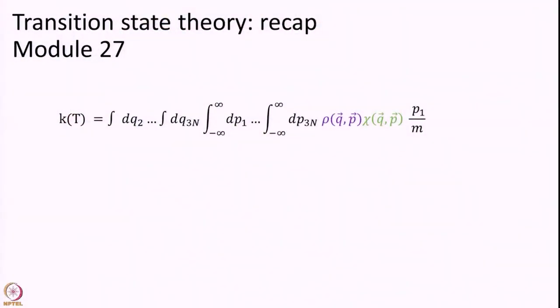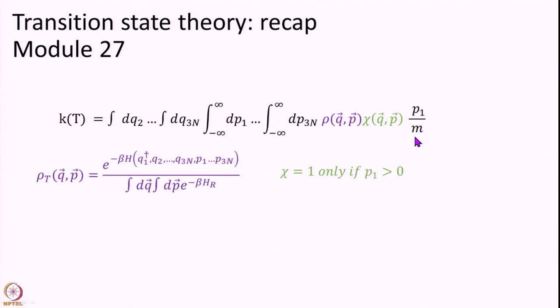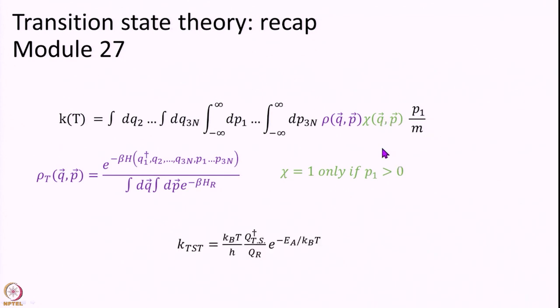We will do a quick recap of what we covered in module 27. We wrote an expression to calculate the rate constant at a given temperature by integrating over the dividing surface over momenta. This expression contains the density rho, the transmission factor chi, and the flux. Transition state theory assumes rho to be the thermal Boltzmann density. For chi, we put chi equal to 1 if p_1 is greater than 0, otherwise chi equal to 0. With these assumptions we can derive transition state theory and get the known expression.